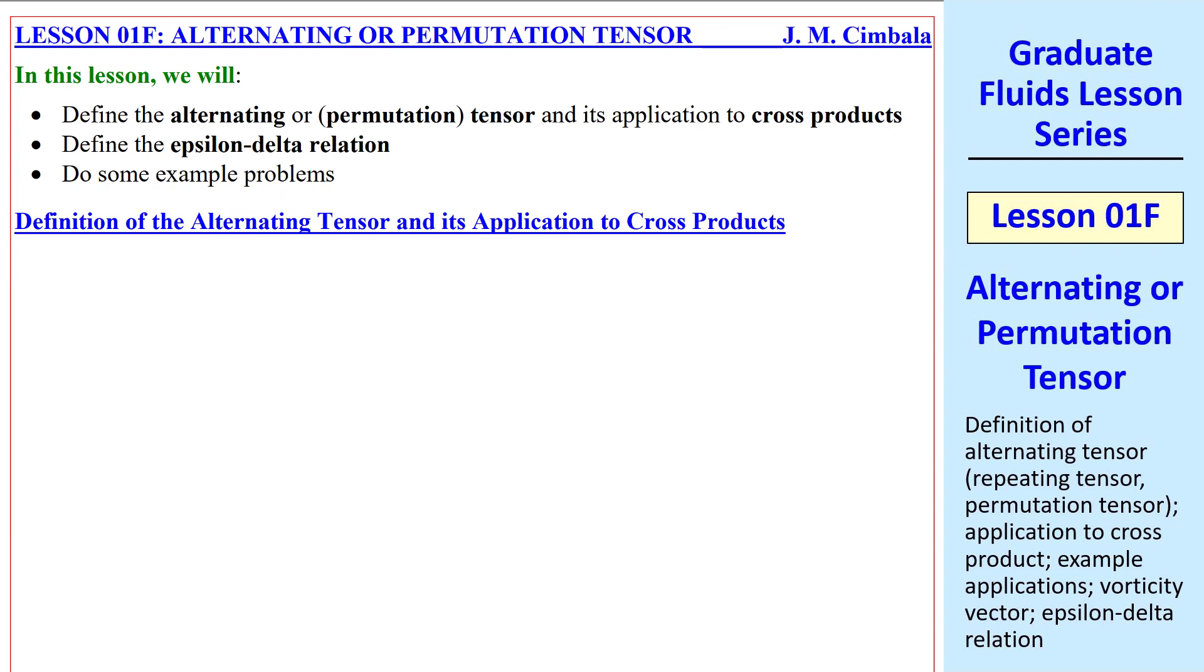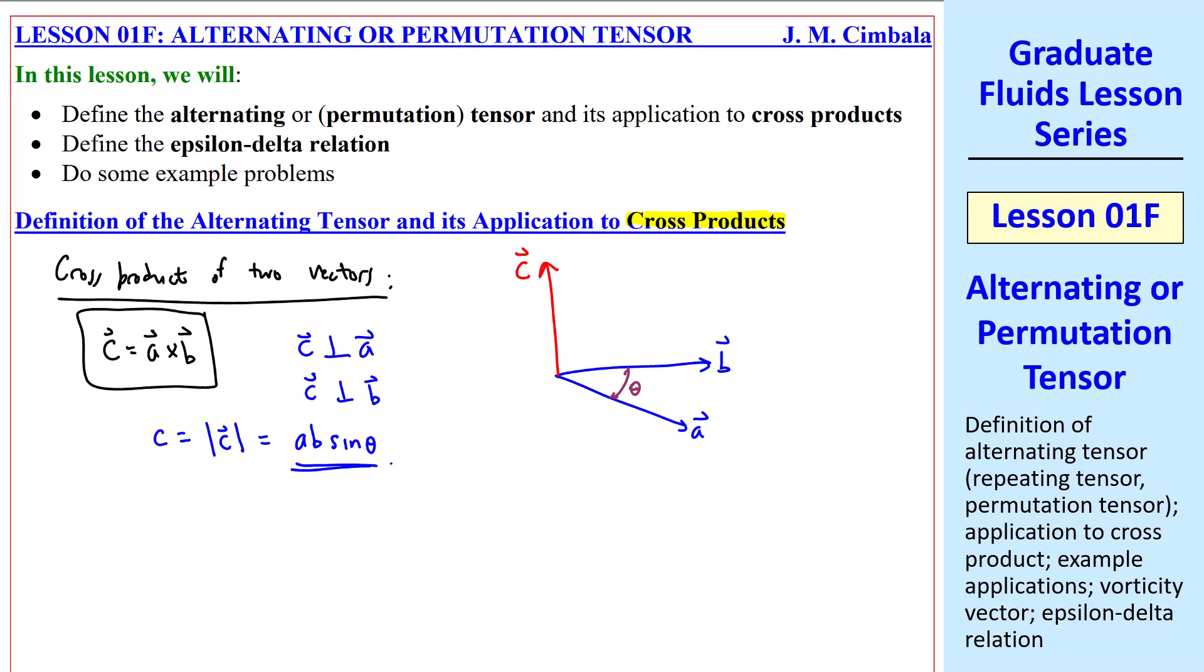In the previous lesson, we defined the Kronecker delta function and applied it to dot products. Now we'll talk about the alternating tensor and how it applies to cross products. Consider the cross product of any two vectors, vector A and vector B, with some angle theta between them, and let vector C be A cross B. This new vector C is perpendicular to A and B, and we use our right-hand rule to find that direction. The magnitude of C is AB sine theta. This makes C equal zero if A is parallel to B or negative B, because in that case theta would be either zero or 180 degrees, and the sine of theta would be zero.